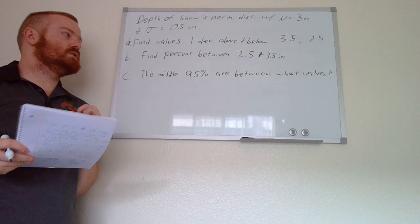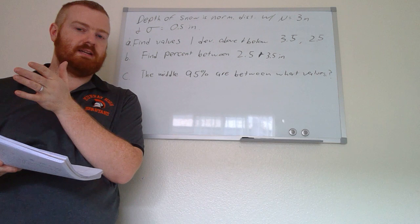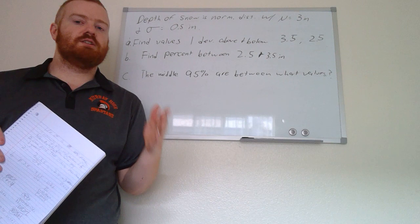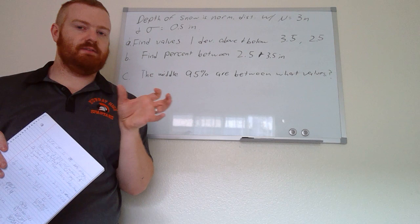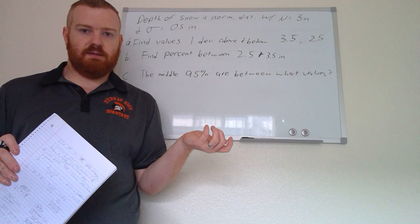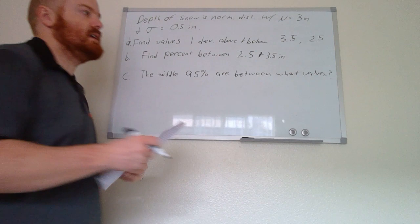For part b, we find the percent of data points falling between 2.5 and 3.5 inches. Since 2.5 is one standard deviation below the mean and 3.5 is one standard deviation above, we apply the empirical rule: 68% of all data points fall within one standard deviation above and below. So 34% + 34% = 68% of houses fall in this category.